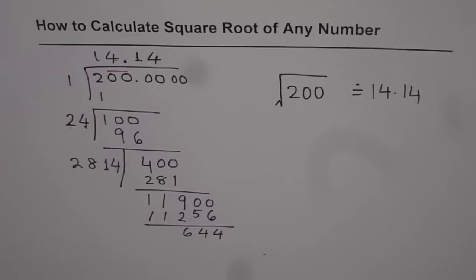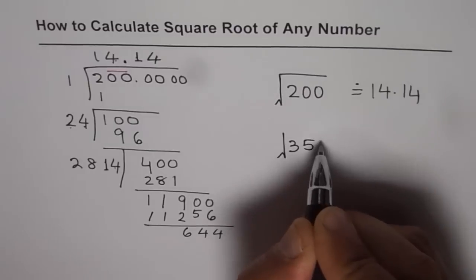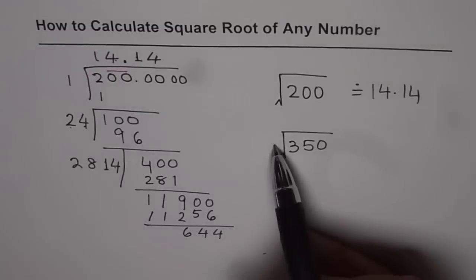I hope you appreciate this special kind of division process by which we can actually calculate square root of any number. Try this technique and find square root of, let's say, 350. You can do repeated division in this fashion - you have to write the same number.